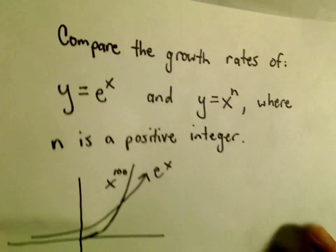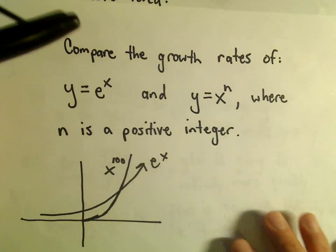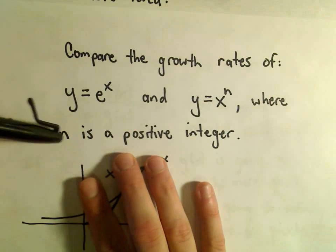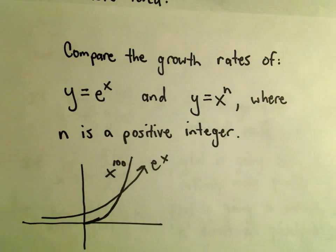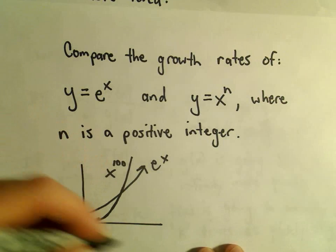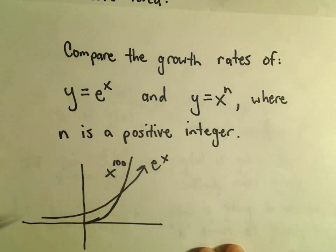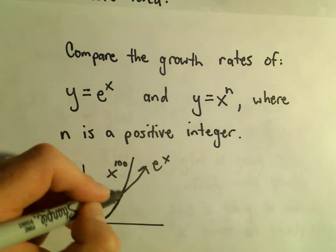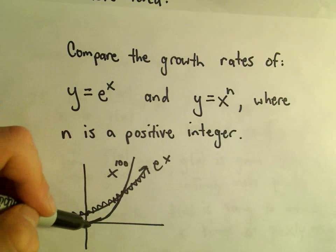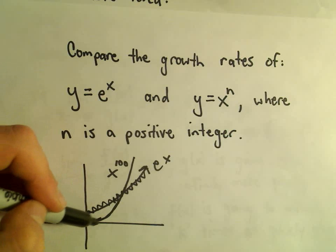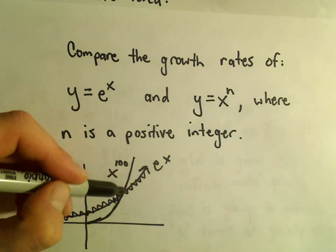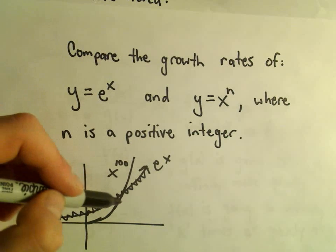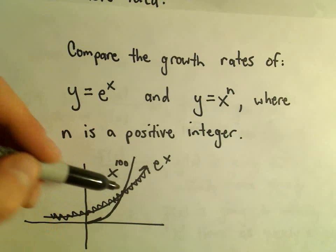Let's look at one example. Let's compare the growth rates of e to the x and y equals x to the n, where n is a positive integer. I've graphed a bit of e to the x here — that's our exponential function. And x to the 100 gets pretty big pretty quickly; it actually overtakes e to the x for small values of x.